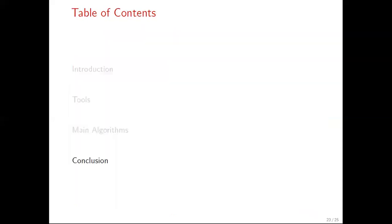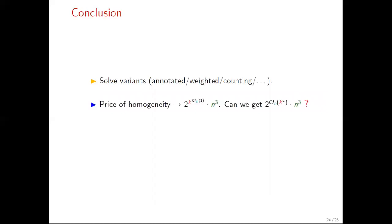To conclude, I would like to point to some issues. First, using our approach, we can solve variants of the problem, such as the annotated version, the weighted version, the counted version, and more. Also, as we saw earlier, the price we pay for homogeneity results in this non-uniform polynomial on k. Is this unavoidable? Can we get a uniform polynomial on k, not depending on the target class, bypassing the issues that arise from homogeneity? Or can we get something even better by cascading irrelevant vertex technique?